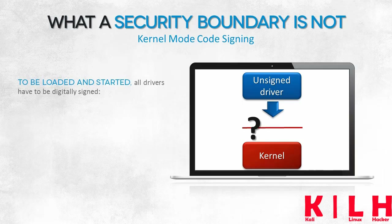How does kernel mode code signing work? At the system start, a list of revoked and blocked drivers is loaded. This is something along the lines of an exclusion list. If a driver can be found on this list, an attempt to load it will be blocked.